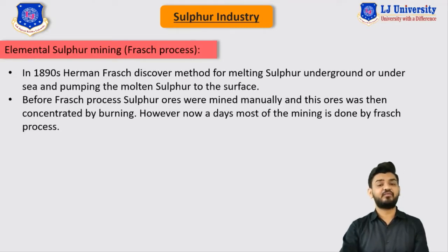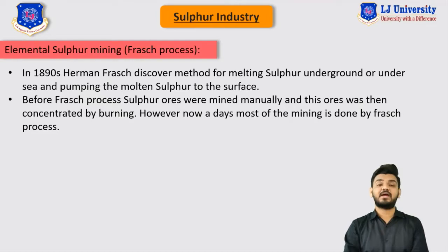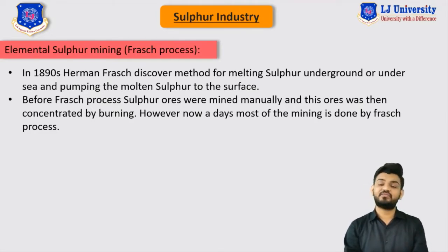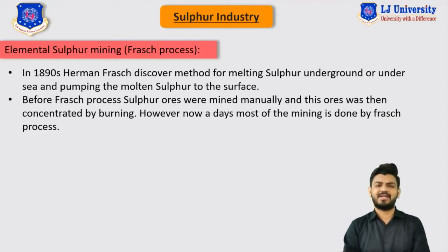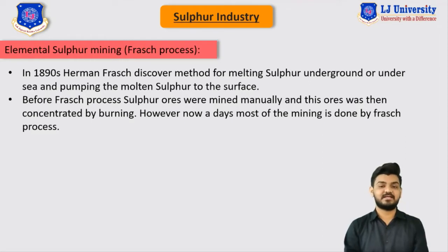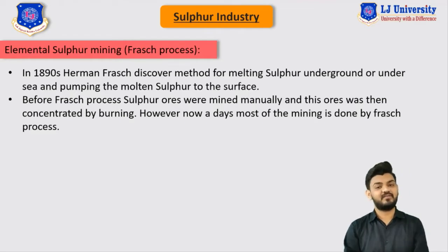In the 1890s, the scientist Hermann Frasch discovered a method to melt down underground sulphur and pump it to the surface of the earth. Before this Frasch process, sulphur ore was manually mined and burned to get pure sulphur — a very tedious and energy-consuming process. The Frasch process, on the other hand, is less energy consuming, and nowadays the majority of sulphur extraction is done using it.